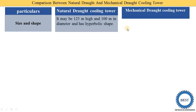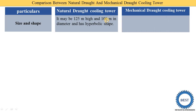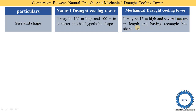Regarding size: in a natural draft cooling tower, it may be 125 meters in height and 100 meters in diameter, with a hyperbolic shape. In a mechanical draft cooling tower, the height is about 15 meters and several meters in width, having a rectangular box shape.